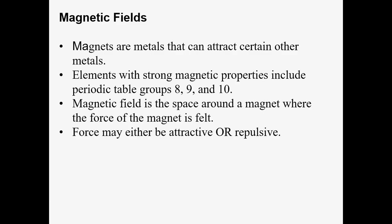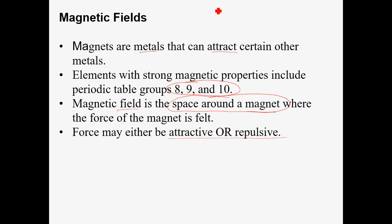Magnetic fields — quickly, because there are no calculations required. Magnets are metals that can attract other metals. Elements with strong magnetic properties can be found on the periodic table in certain groups. Just like with the other fields, it's the space around the source — here the magnet — that we call the magnetic field. Just like with electric fields, they can be attractive or repulsive. For electric fields, opposite charges attract and same charges repel; a charged object also attracts a neutral one.